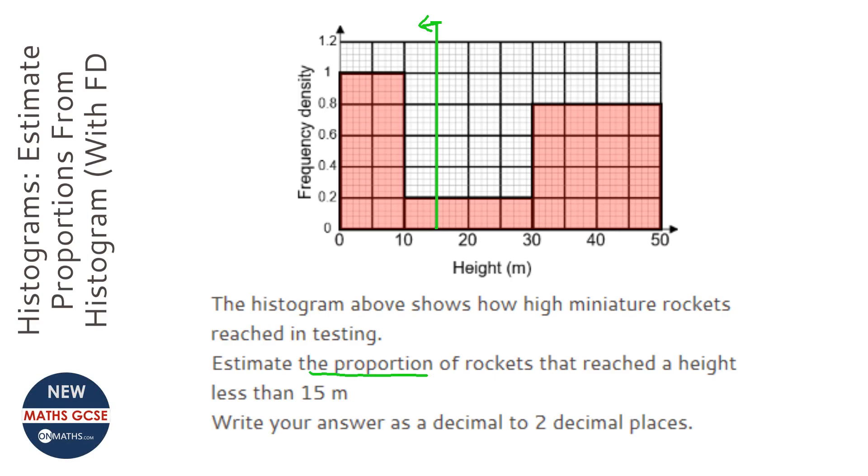So there are two ways of doing this. Either I can work out all the frequencies of the rectangles to the left of that line and then work out the total frequencies by working out the frequencies of all the rectangles, or I can just count the squares. It might be easier in this question just to count the squares.